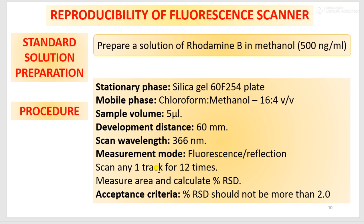For the reproducibility evaluation, you have to apply the track and scan that track or band 12 times. You can apply any concentration and scan that concentration 12 times. Measure the area and calculate percentage RSD. The acceptance criteria: percentage RSD should not be more than 2%.